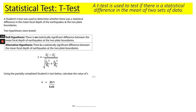It says T equals 22.1 over 4.43. When you see that, all you've got to do — easiest marks in the world — is get your calculator out and divide those numbers they give you. That will give you T equals 4.99.